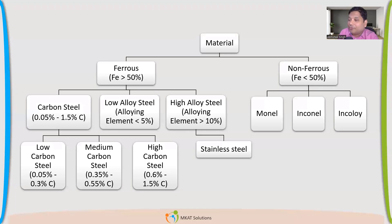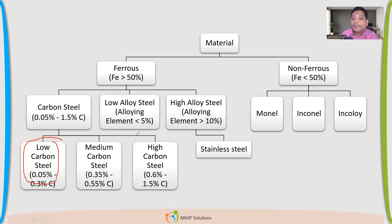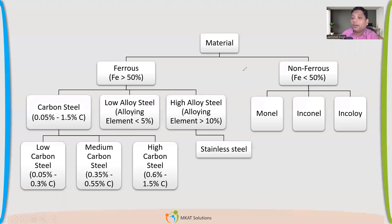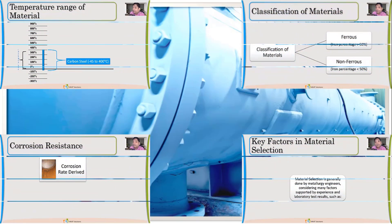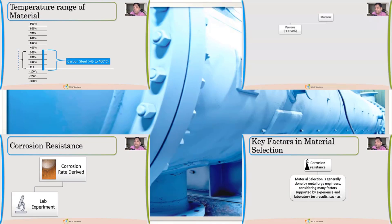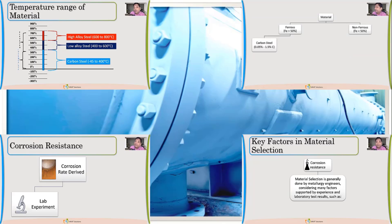In high alloy steel, stainless steel is what we primarily discuss. So finally, it boils down to only two or three major materials used in the pressure vessel industry: low carbon steel, low alloy steel — the chromoly steels — and stainless steel. Focus on just these three. Stainless steel can be austenitic, ferritic, and martensitic. Do watch our other videos related to materials. Thank you.